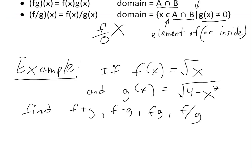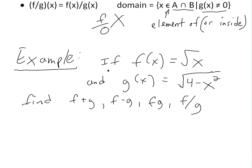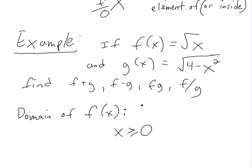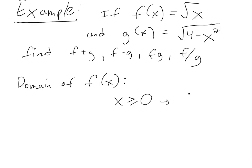Now let's do an example to illustrate this combination of functions. If f(x) = √x and g(x) = √(4 − x²), find the addition, subtraction, multiplication, and division of these two functions. First, we need to find the domains. For f(x), since it's a square root, the inside must be greater than or equal to 0. So x ≥ 0, which in interval notation is [0, ∞).